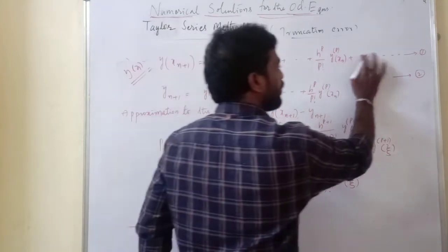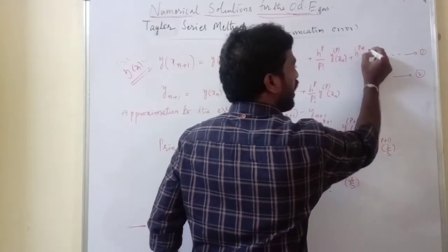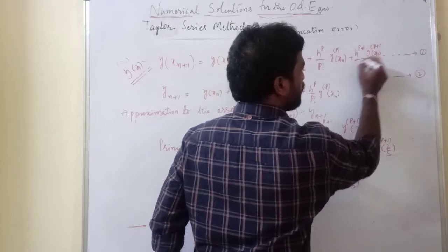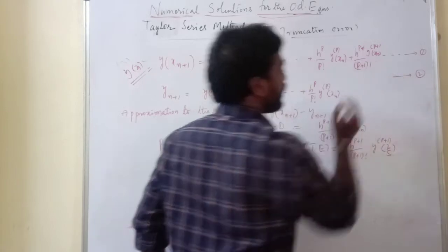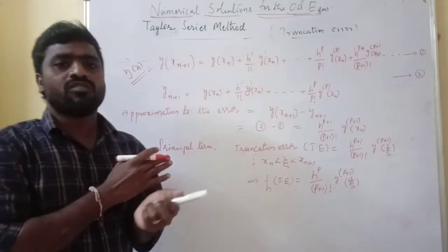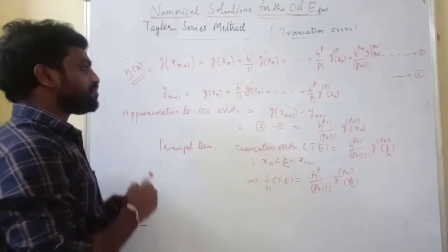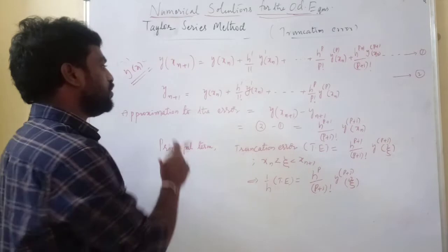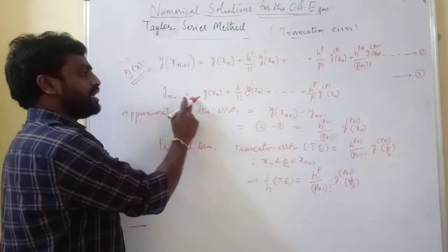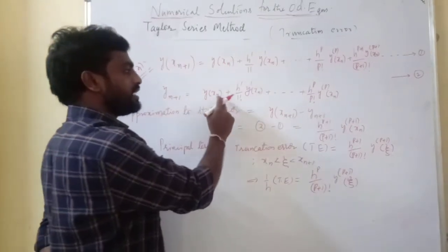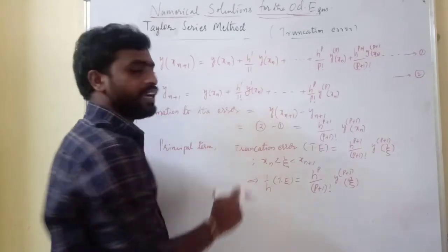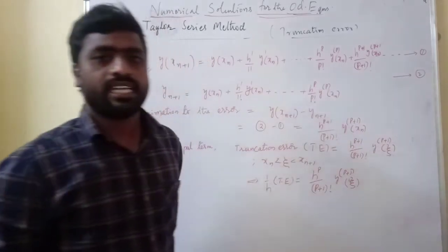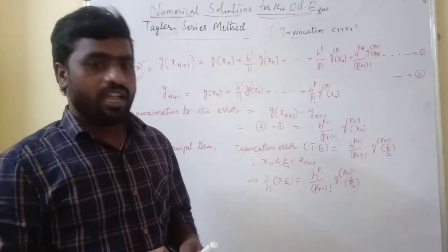The pth order Taylor series, representing equation 2, gives: y(n+1) equal to y(xn) plus h over 1 factorial times the first derivative at xn, and so on up to h to the p over p factorial times the p-th derivative at xn. This is the Taylor series at finite order p.